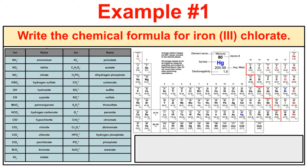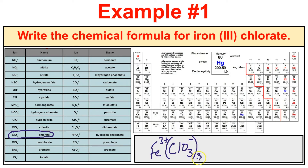Write the chemical formula for iron(III) chlorate. Iron(III) is Fe with a 3+ charge, and chlorate is ClO3 with a 1- charge. These don't add up to zero, so we put parentheses around the polyatomic ion and add a subscript of 3, since 3×(-1)=-3 and 1×(+3)=+3. The correct chemical formula is Fe(ClO3)3.